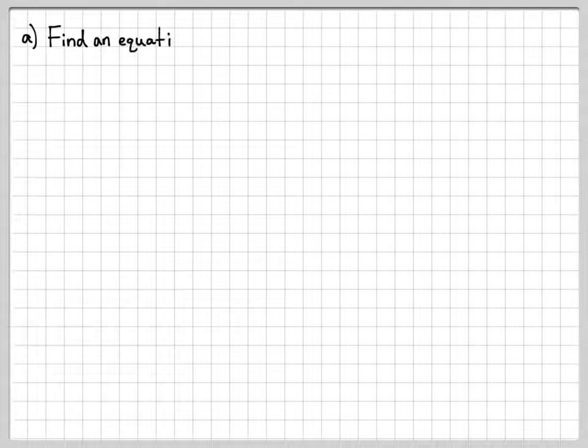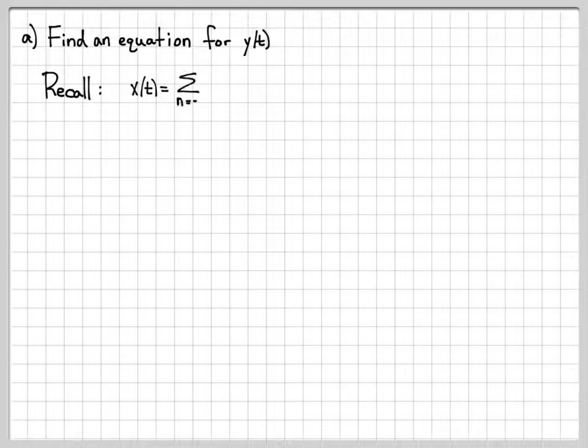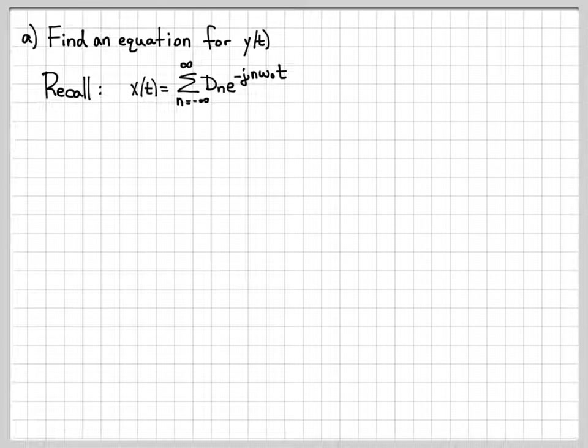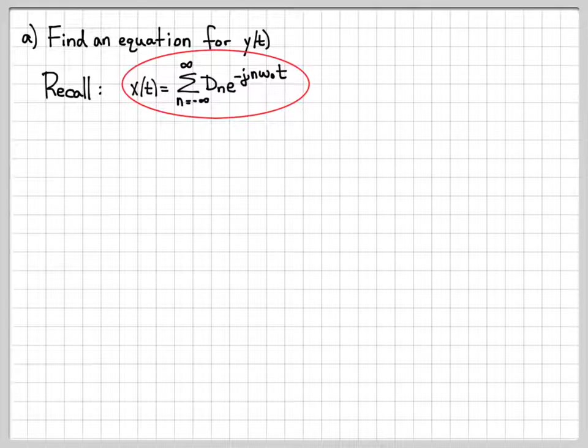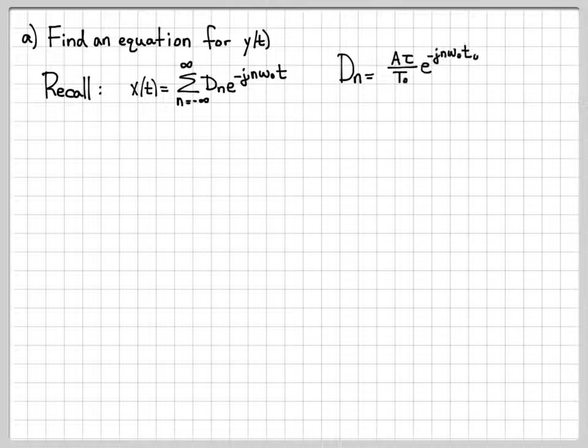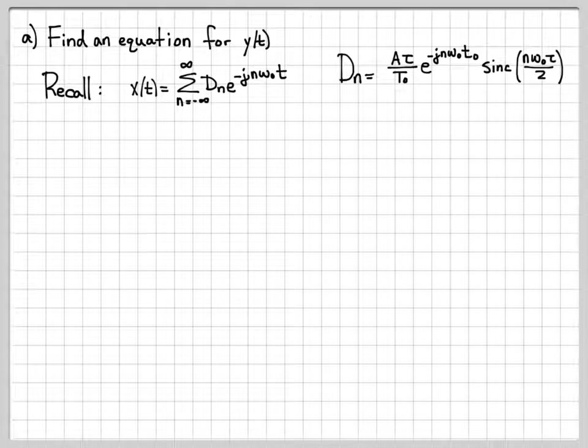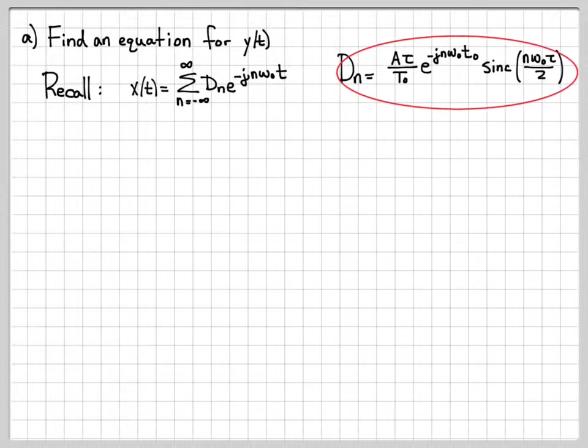Let's answer some questions about the output. So the first thing we're going to do is we're going to find an equation for y of t, a time domain signal representation of the output. So if you remember, when dealing with periodic signals, we can always write a periodic signal in its exponential Fourier series representation, which I've done right here. So we can write x of t equals this infinite sum. And actually, we've previously analyzed this type of signal. So previously in the class, we analyzed a very generic pulse train, and we actually computed the Fourier series coefficients for that pulse train.